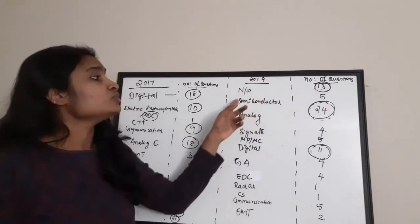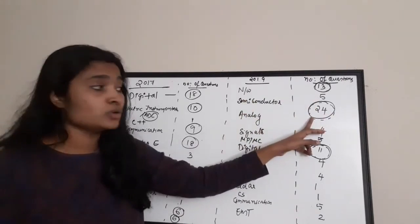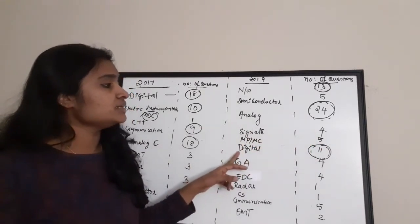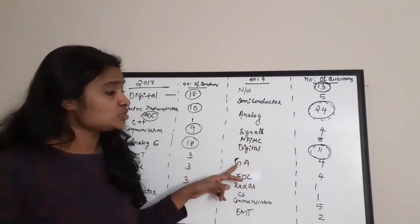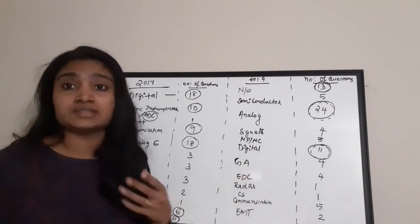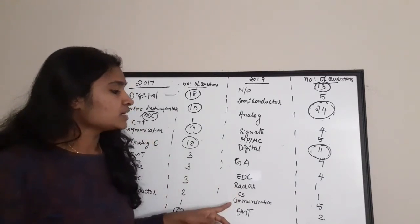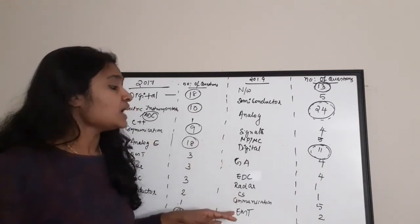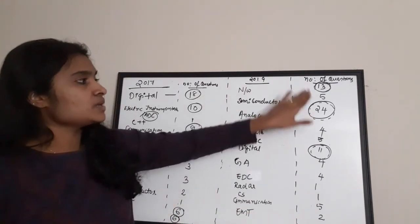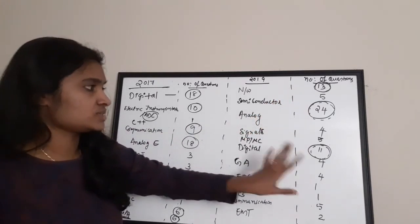Continuing with 2019 data: Signals — 4 questions; Microprocessor and Microcontroller — 5; Digital Electronics — 11; General Aptitude — 4; EDC — 4; Radar — 1; Control Systems — 1; Communication Systems — 5; and EMT — 2 questions. The largest numbers in 2019 were from Network Theory, Analog Electronics, and Digital Electronics.